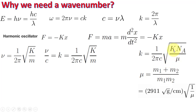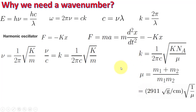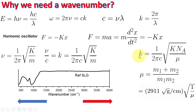With k around 5000 N/cm and substituting the constants, the expression simplifies to approximately 2911 × √(1/μ). For example, for a carbon-carbon bond, we insert the carbon masses to calculate the specific wave number. This gives us a specific wave number for each bond type in the FTIR spectrum.